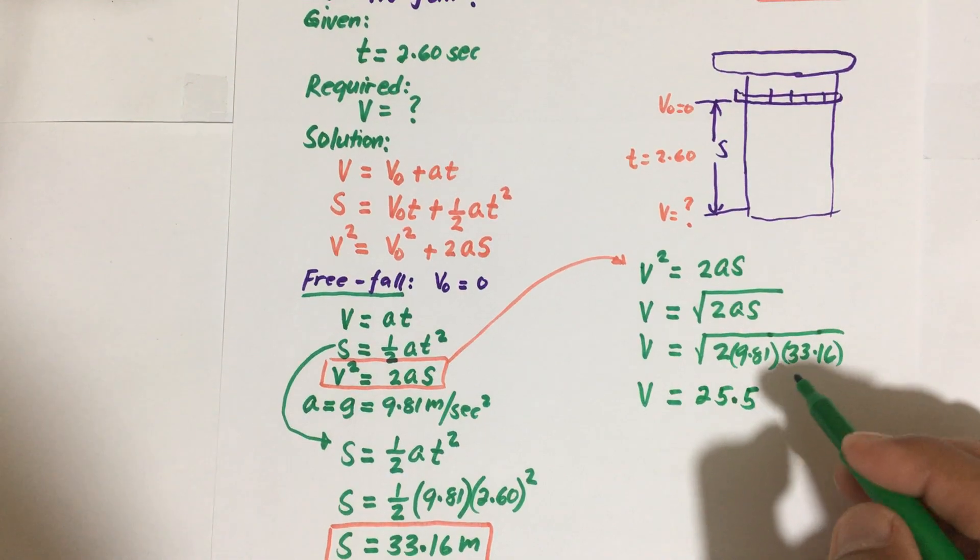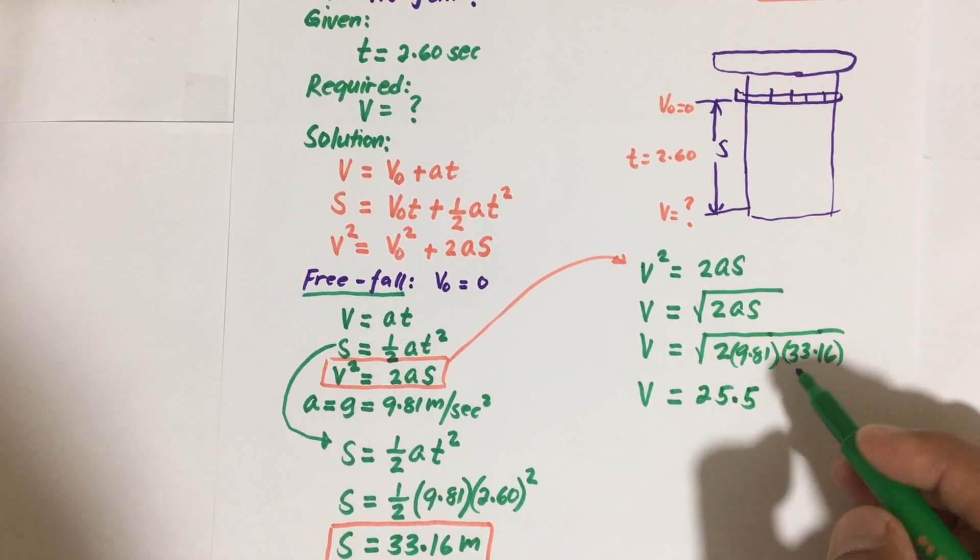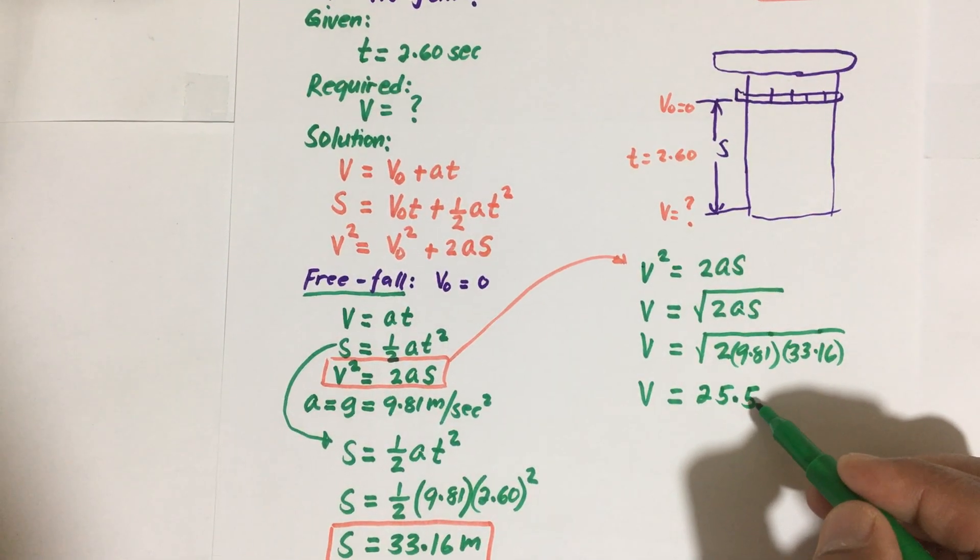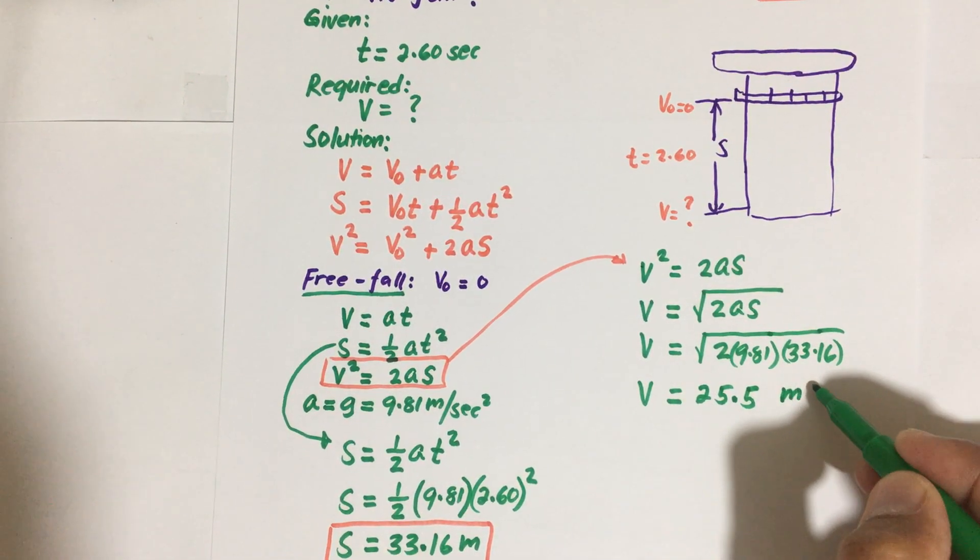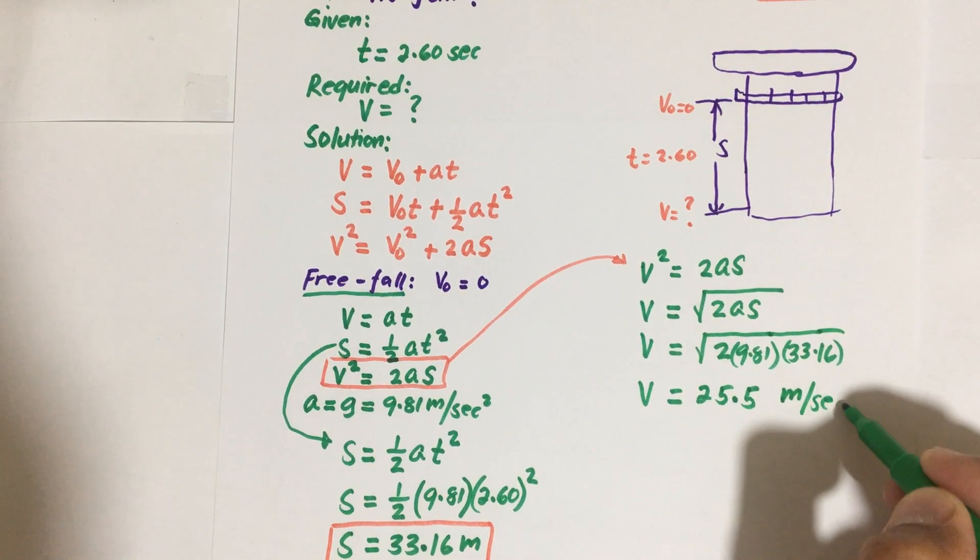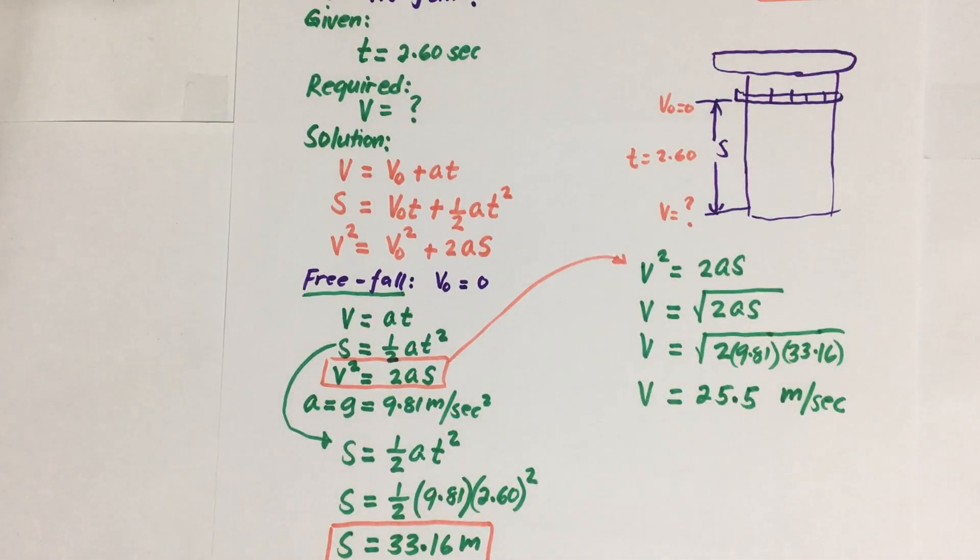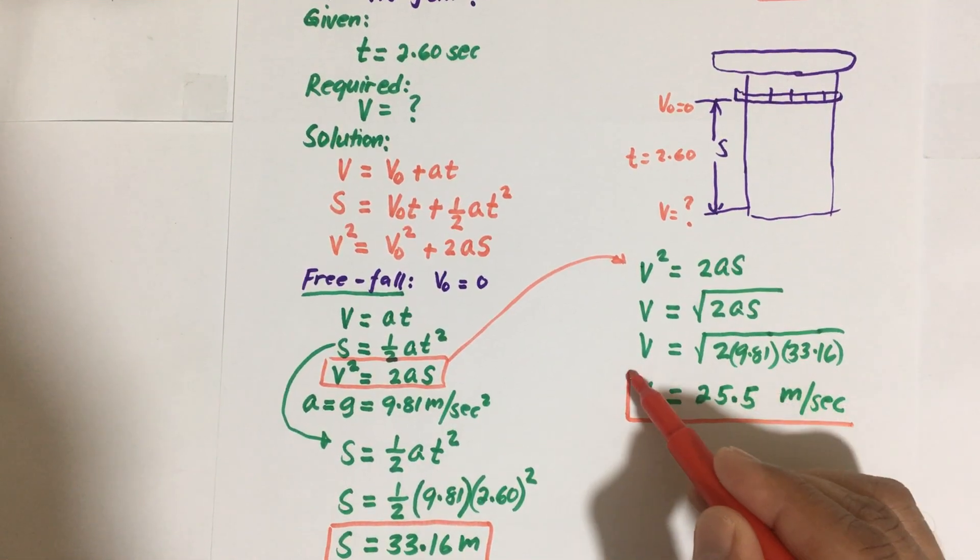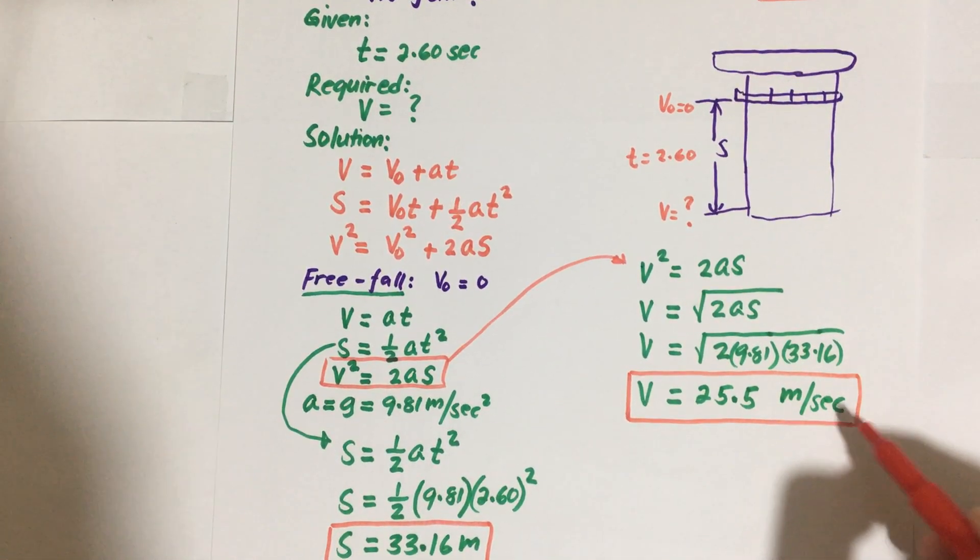So V therefore is equal to, using your calculator, it will give you 25.5 or 25.51. And the unit here is in terms of meters per second.